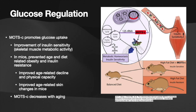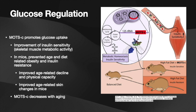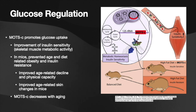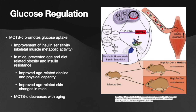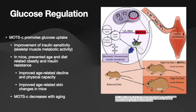MOTS-C is also heavily involved in glucose regulation — it essentially promotes glucose uptake and insulin sensitivity. Because of the high skeletal muscle metabolic activity it drives, it more effectively and efficiently breaks down and utilizes glucose. In mice, it has been shown to prevent age- and diet-related obesity and insulin resistance, and it's improved age-related decline in physical capacity and age-related skin changes as well. Notably, MOTS-C levels decrease with aging, which explains why it might be especially useful in an aging population.